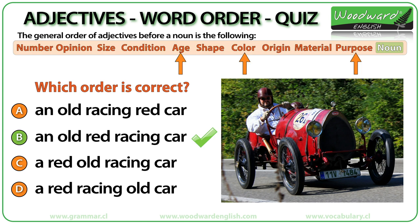An old red racing car. Old refers to age, red is a color, and racing refers to the purpose of the car — what it is used for. The order is: age, then color, then purpose. We use 'an' at the beginning because the next word begins with a vowel — old begins with the vowel O.